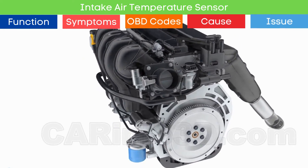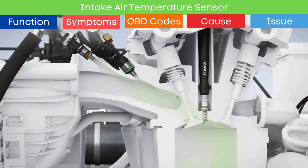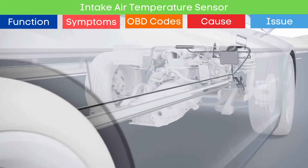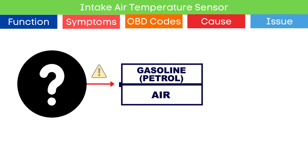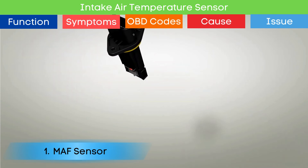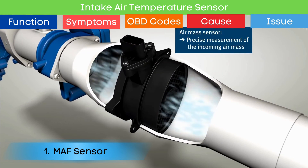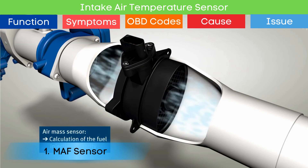When a car exhibits the symptoms mentioned above and the IAT sensor has been checked and found to be in working order but the issue persists, inspecting other components that influence air-fuel ratio is essential. These components can also cause imbalances in the air-fuel mixture and similar symptoms. First: a faulty mass airflow, MAF, sensor. The MAF sensor measures the mass of air entering the engine, providing crucial data for calculating the air-fuel ratio. If the sensor malfunctions, it can cause incorrect readings, leading to imbalances in the air-fuel mixture.